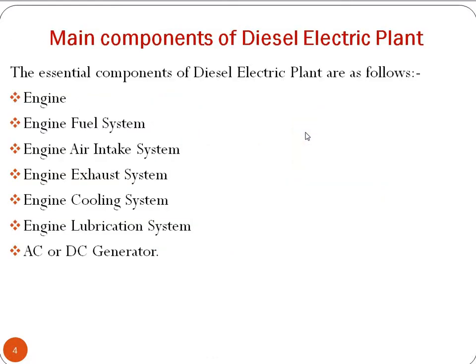The essential components of a diesel electric plant are as follows: first is the engine, then we have the engine fuel system, engine air intake system, engine exhaust system, engine cooling system, engine lubrication system, and last but not the least, we have the AC or DC generator.